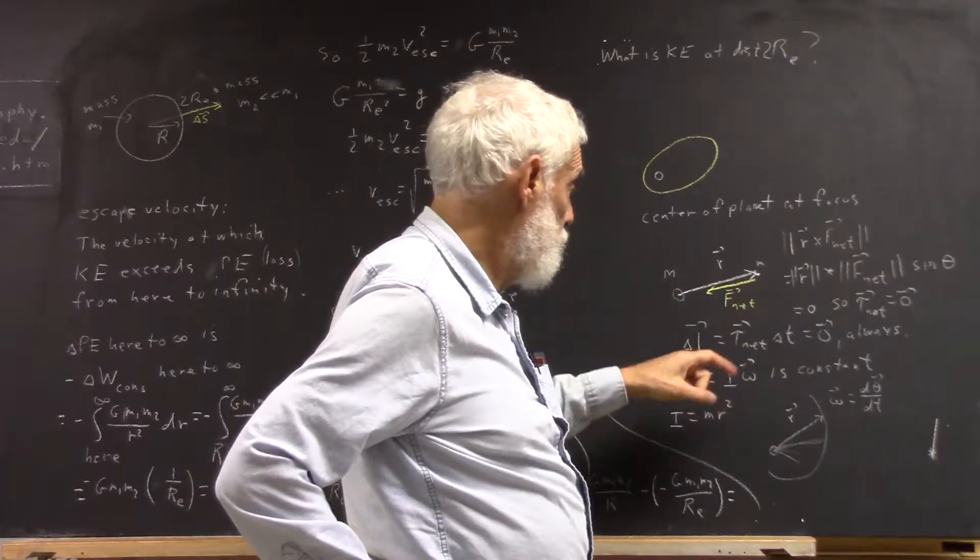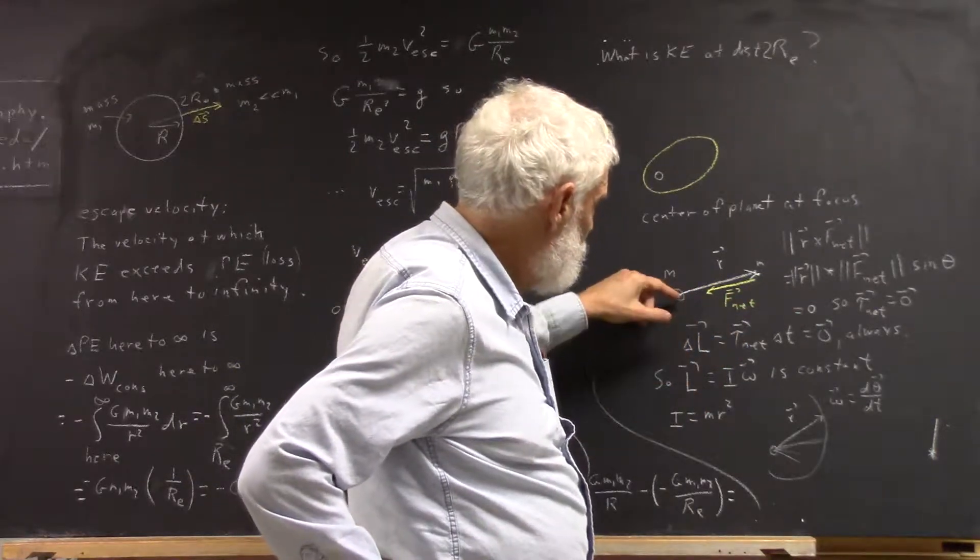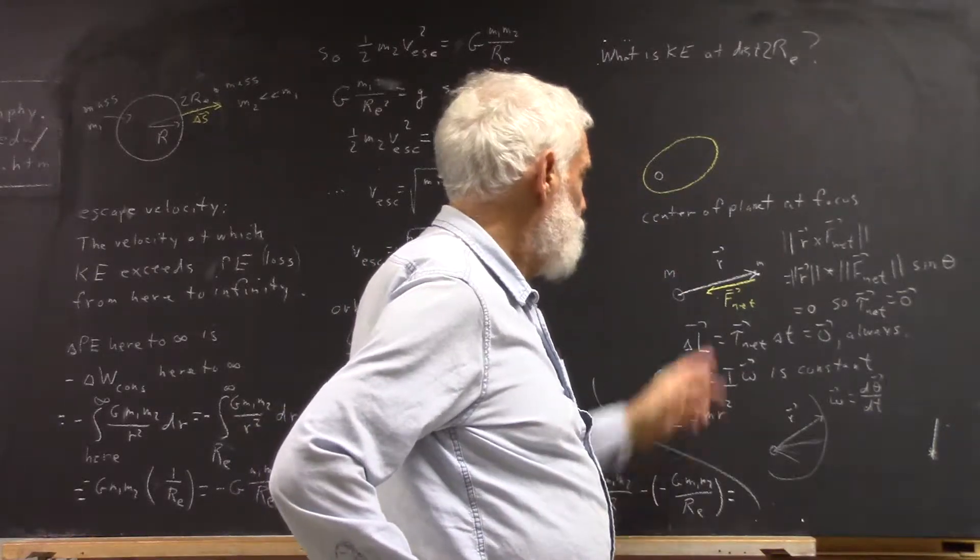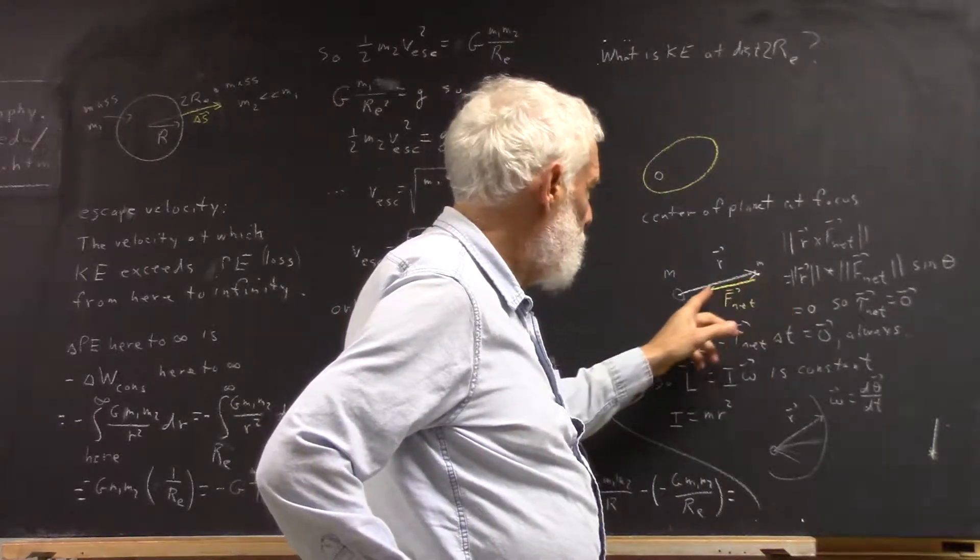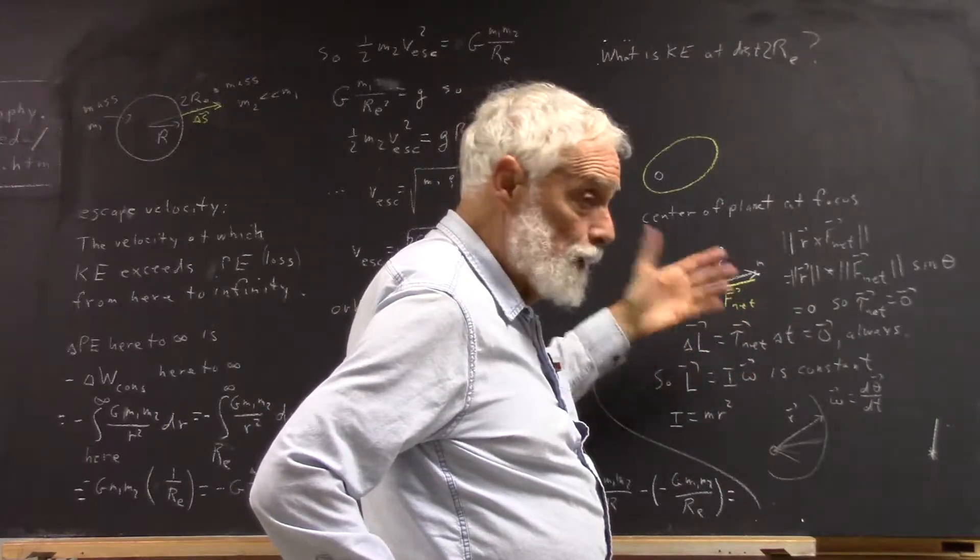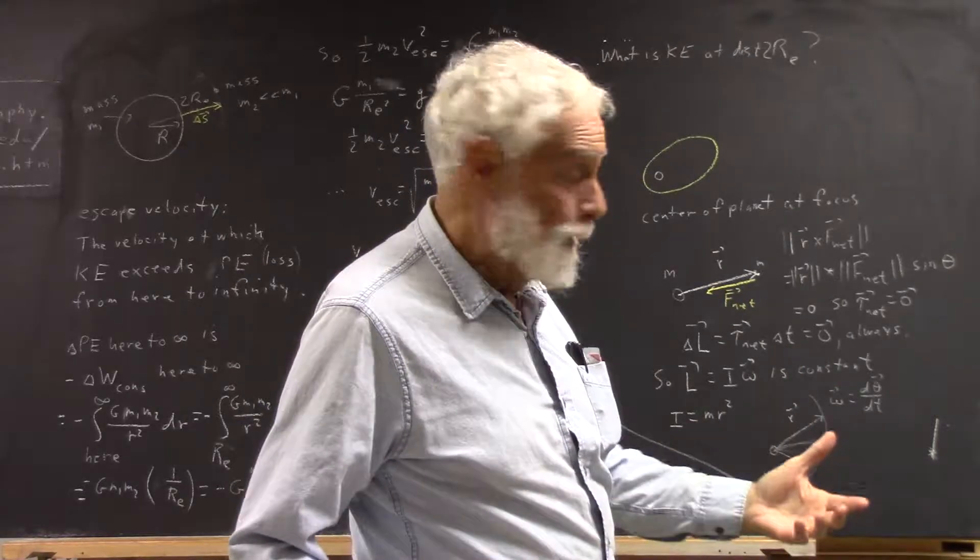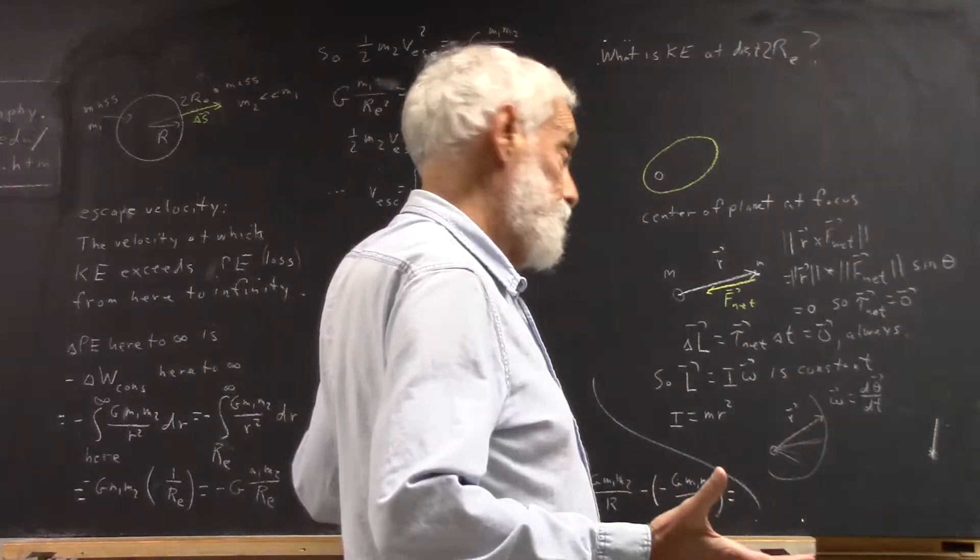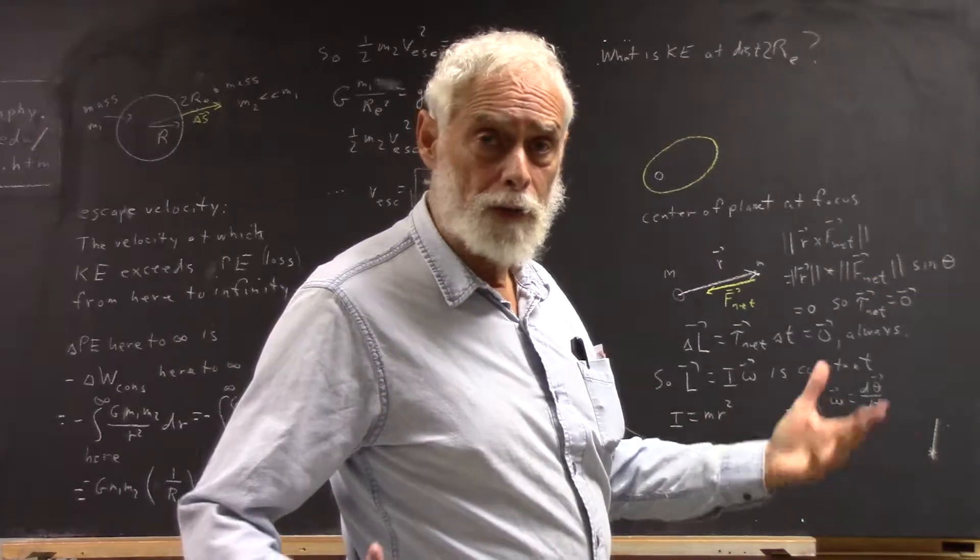Why is that? Because your r vector, the vector from the center of the planet to the mass, is in the direction equal and opposite to that of the net force. It doesn't matter whether it's equal or equal and opposite. The conclusion is that the torque is zero.